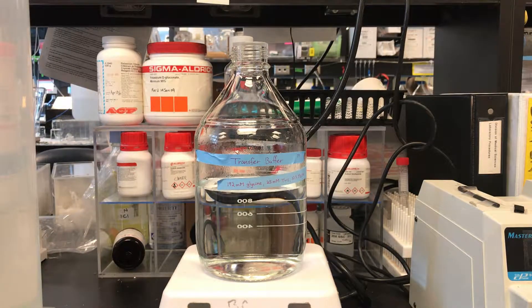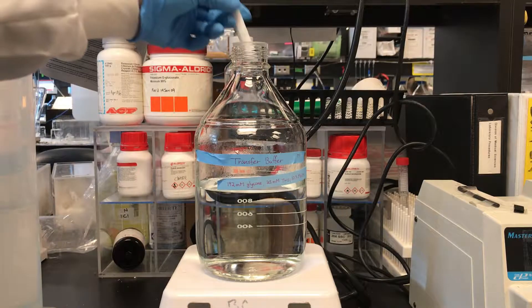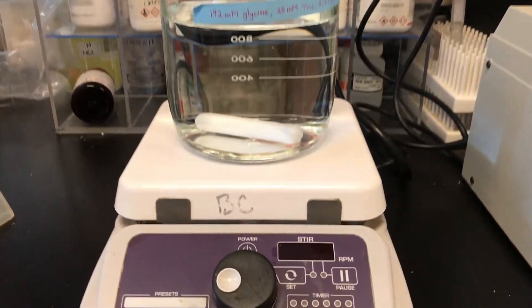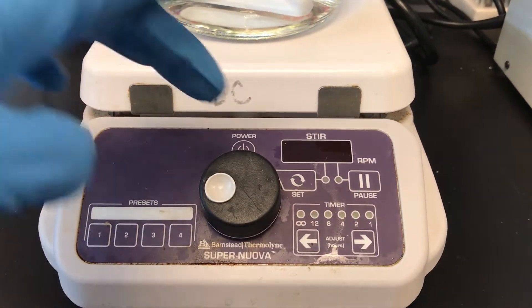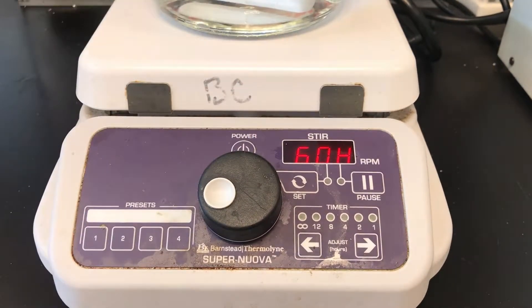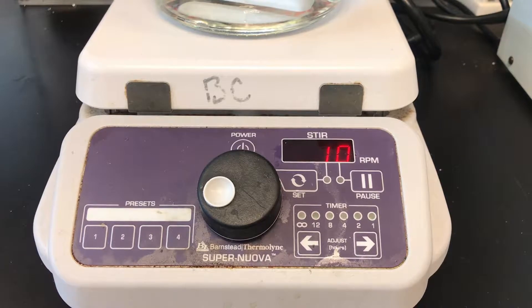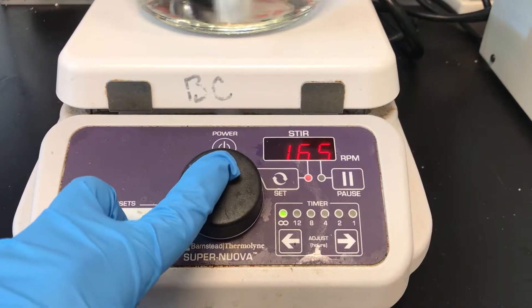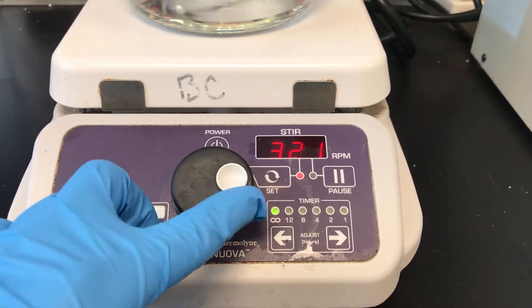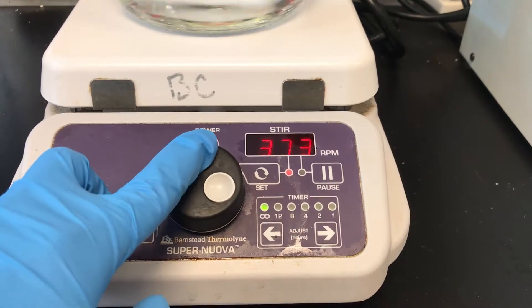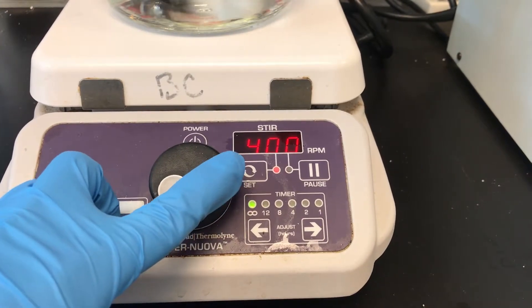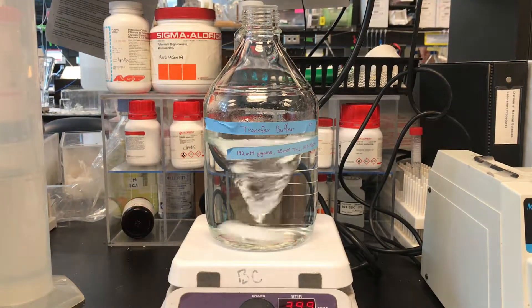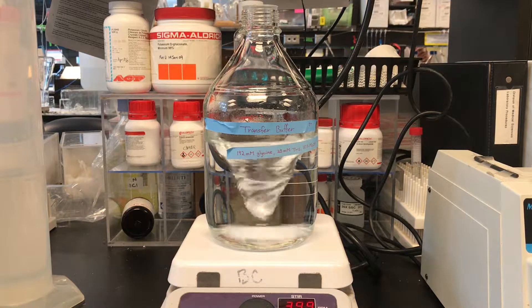Add the magnetic stirrer rod and set the magnetic stirrer until a vortex is present.